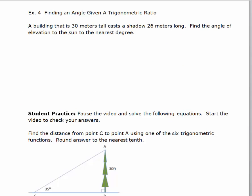Example 4 is different in that in this problem we're trying to find an angle given a trig ratio, as opposed to being given an angle and having to find the trig value. The problem says: A building that is 30 meters tall casts a shadow of 26 meters long. Find the angle of elevation to the sun to the nearest degree. I'm first going to draw a picture.